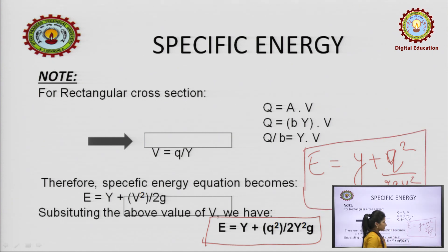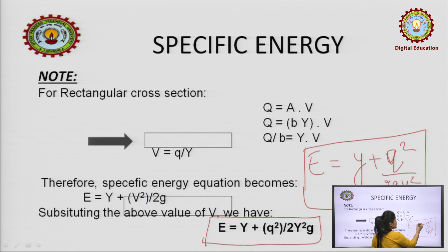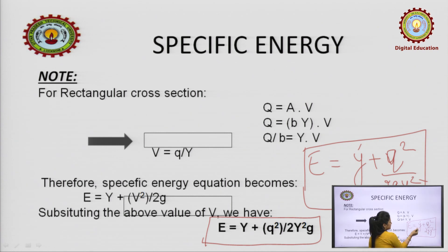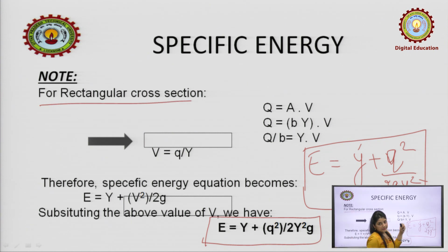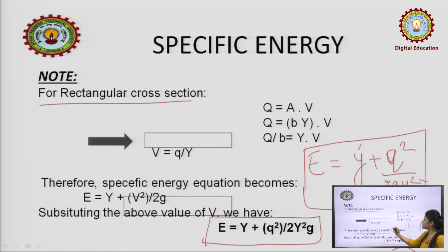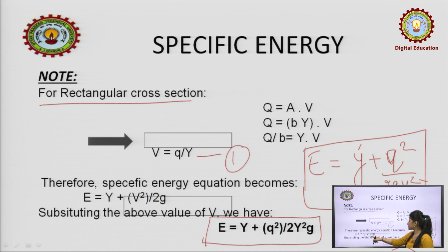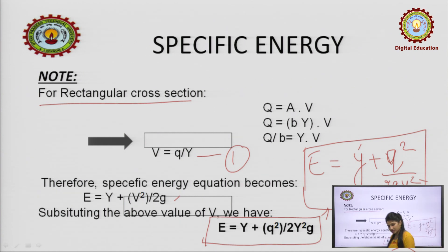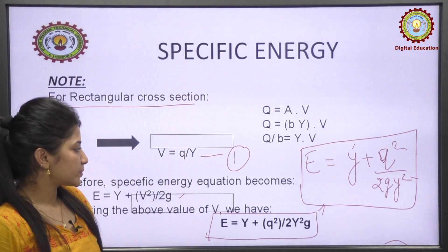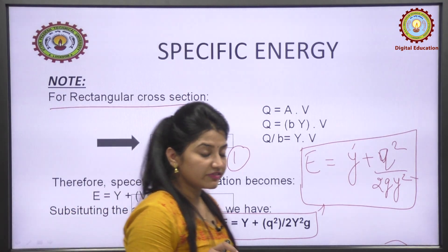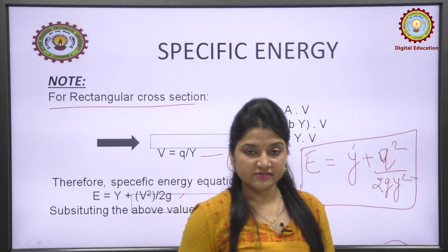You can see that in both the potential energy term and the kinetic energy term, there is a certain depth involved, and the addition of both gives you specific energy. For a rectangular section: Q = cross-sectional area × velocity; taking the value of v and substituting, we get E = y + q²/(2g·y²), where q is the discharge per unit width. This concludes the briefing about specific energy.